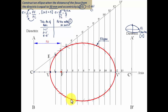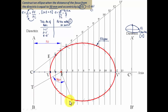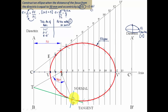To draw a tangent and normal at a point P on the ellipse, join P with focus F. At an angle of 90 degrees to line PF, draw a line toward the directrix; wherever it meets the directrix, call that point T. Joining T to P gives the tangent. The line perpendicular to this tangent through point P is the normal.